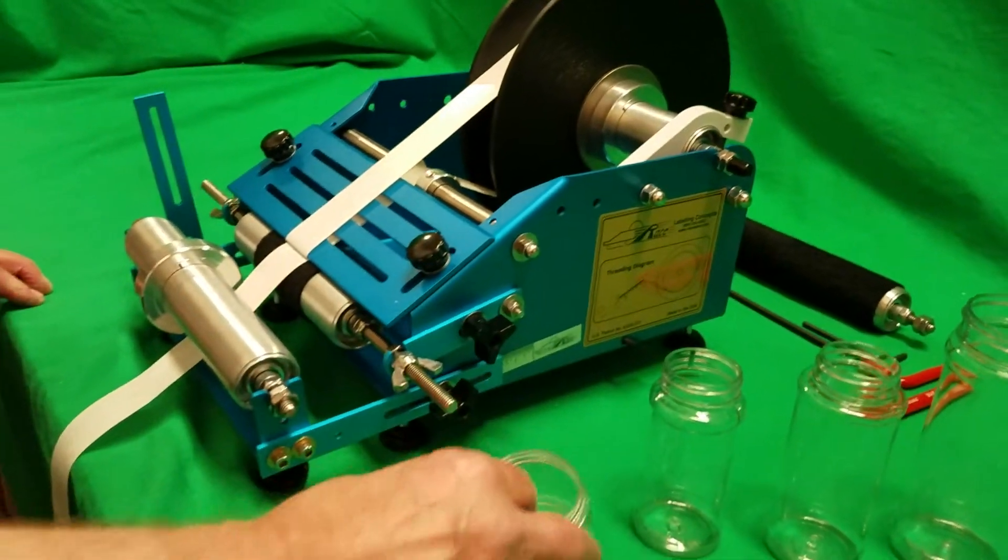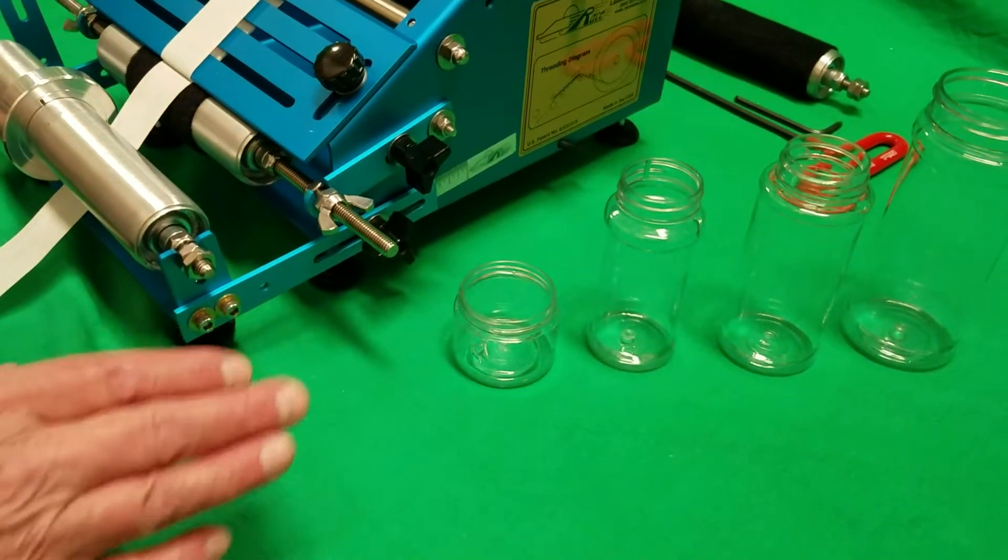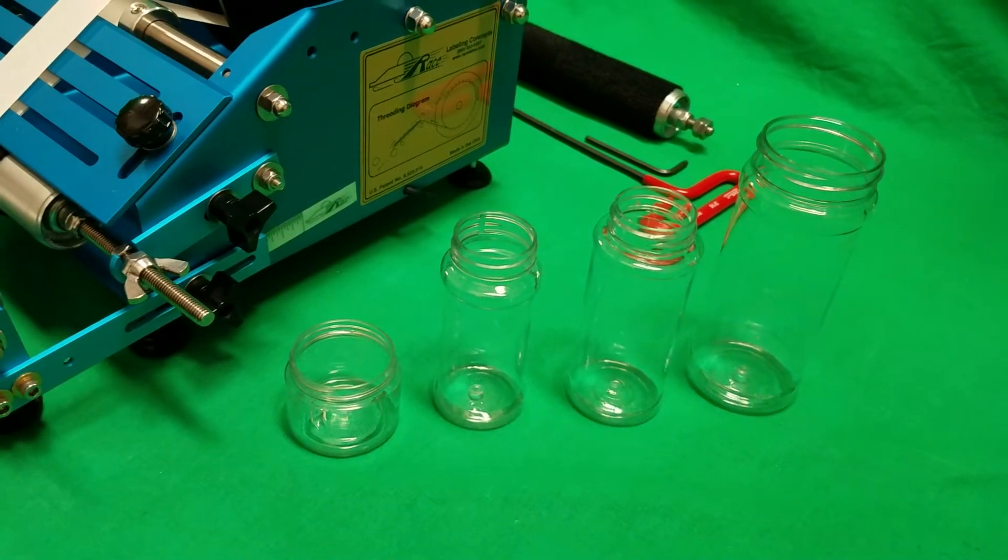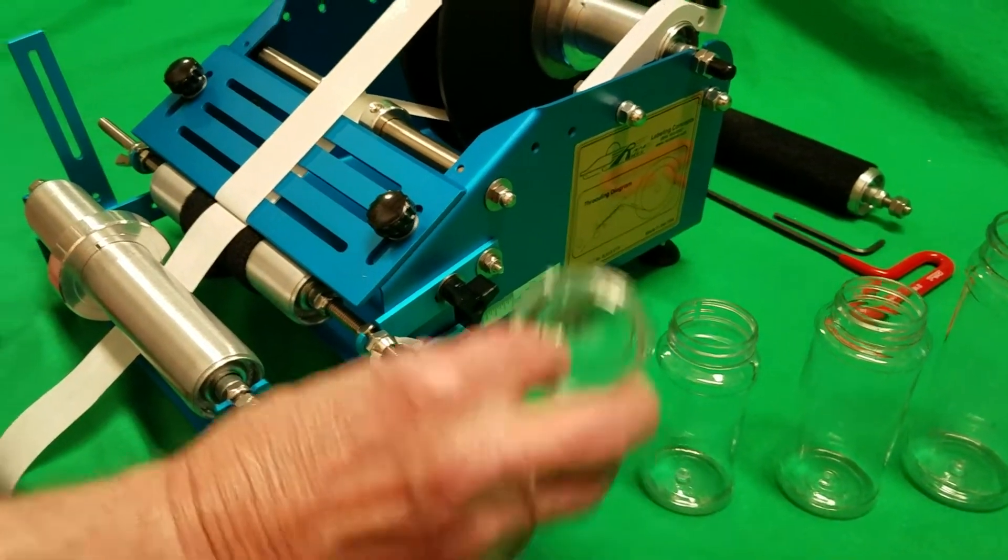The smaller one is not a straight surface, but a slightly tapered jar. So we're going to do the first one, the smallest one, first.